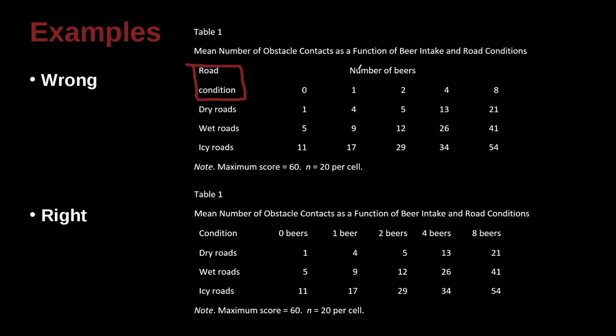And then over here we've got number of beers. So what we're looking at is the mean number of obstacle contacts. I guess that means how many things that they hit in this test. They're driving the car after they drink some beer. So how many obstacles did they impact, did they hit? Of course if you drink more beer, you probably hit more obstacles. And these are means. So that helps us understand that inside this table are these means.